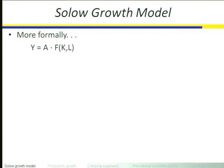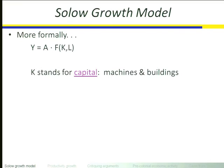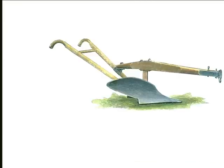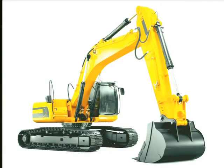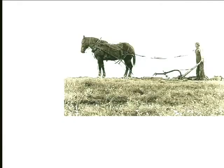K stands for capital. By capital, economists mean machines and buildings — the quantity of machines and buildings. Those machines and buildings include things like machine tools, tractors working outside, and plows. The first picture I flew by was a plow — both the horse and the farmer on the plow are an example of capital. So we have lots of examples of capital.